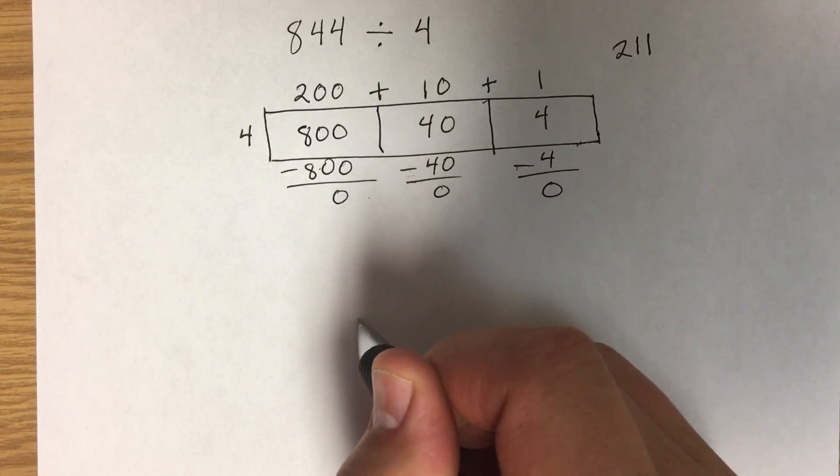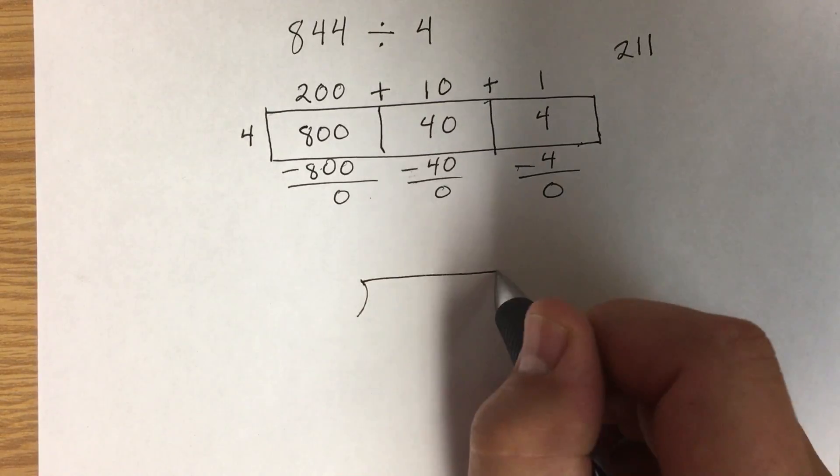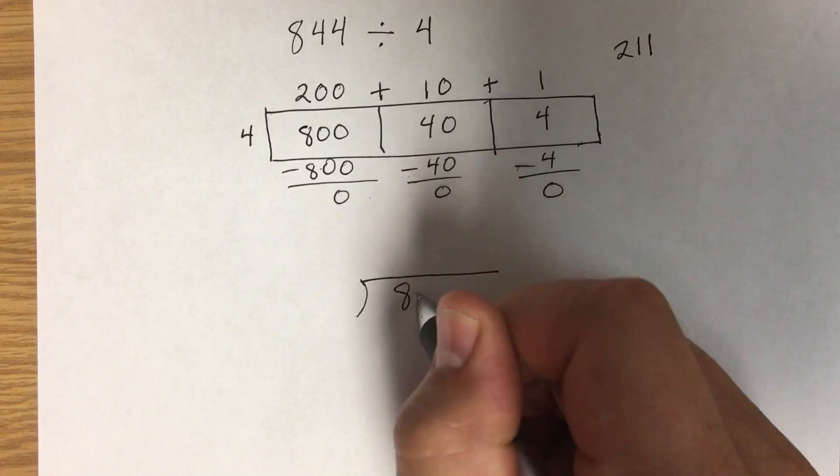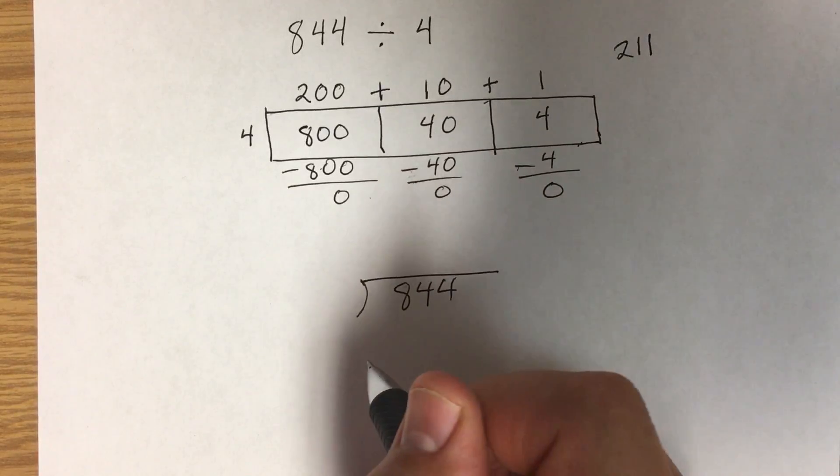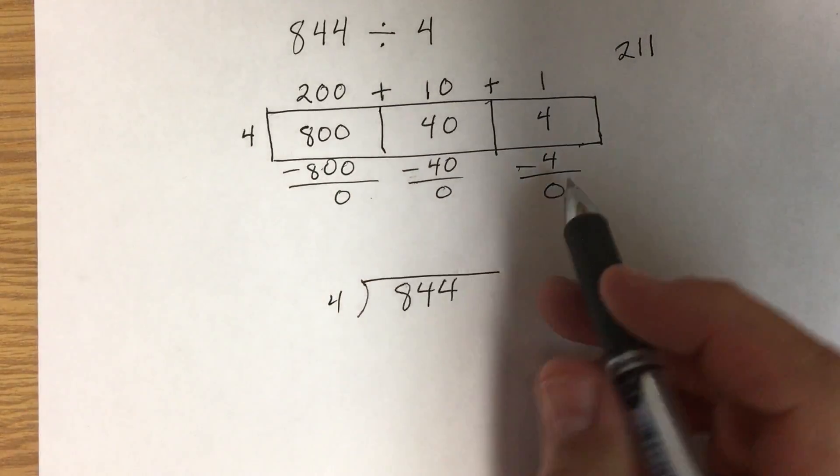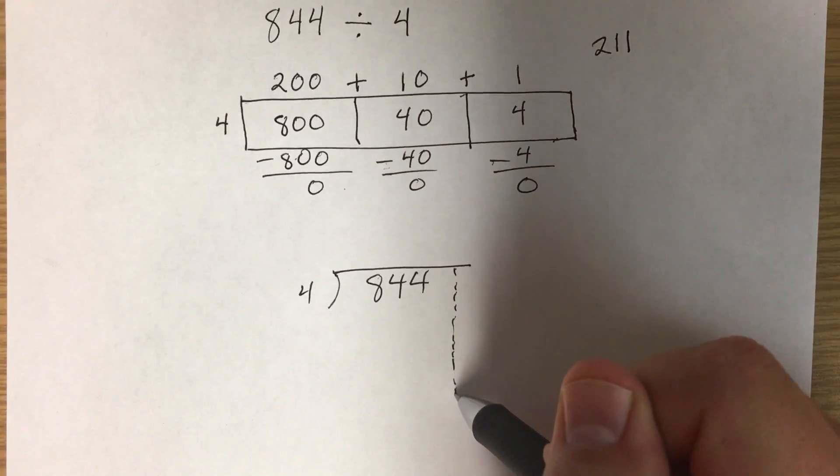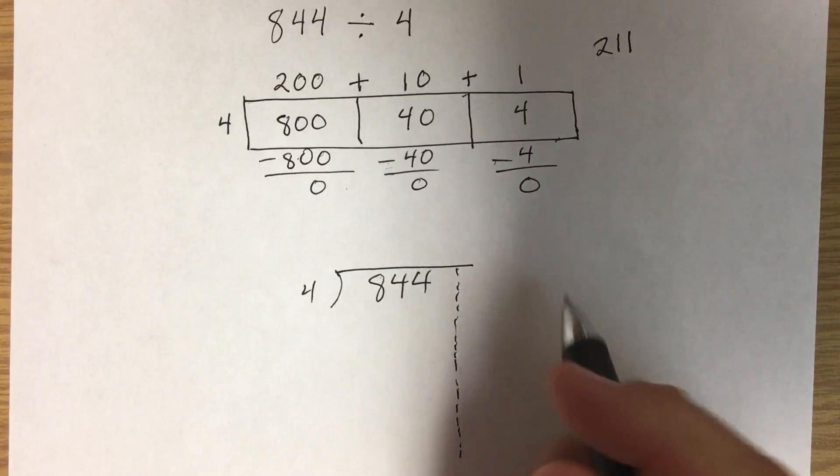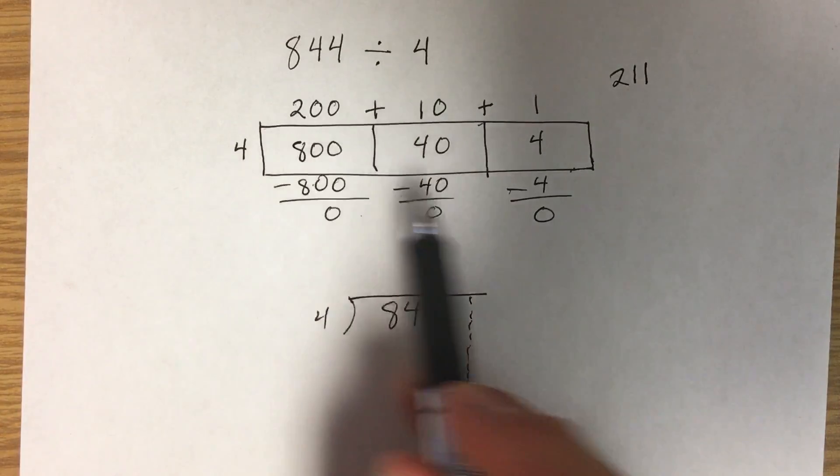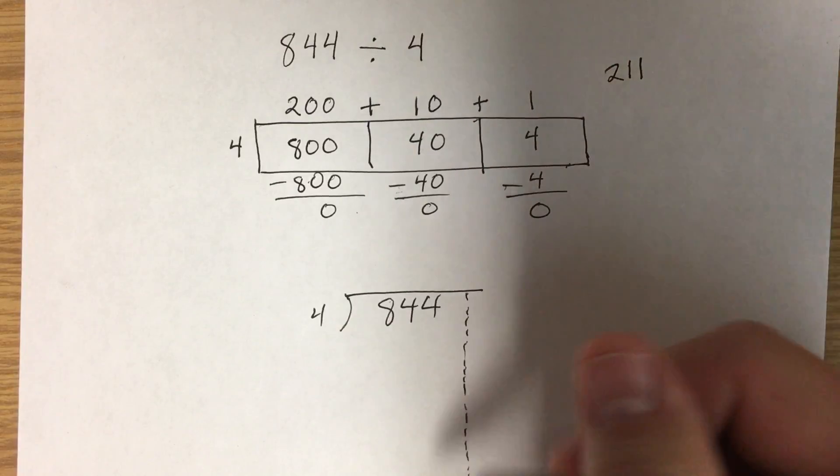So we're going to make that long division house with 844 inside and 4 knocking on the door. This time we're going to put a dotted line down here on the side, and what we're going to do is going to be similar to this, but going down.